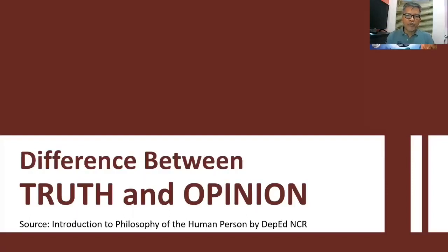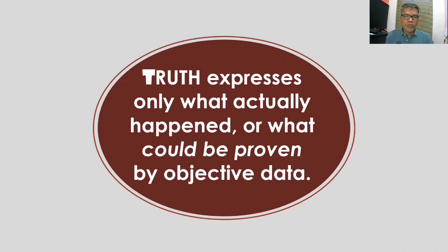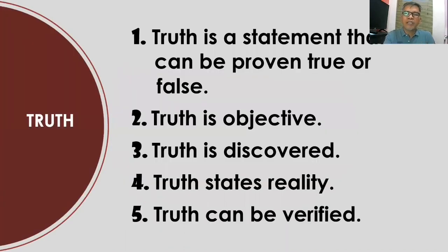Let us discuss first the difference between truth and opinion. Truth expresses only what actually happened, or what could be proven by objective data, or those events that we experience — that we felt, that we saw, or in short, that were perceived by our senses. That's why they can be proven, tested, or verified, because there are objective data or concrete evidences that can support our claim. Specifically, truth is a statement that can be proven.